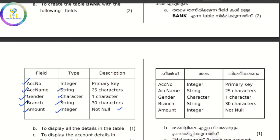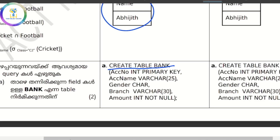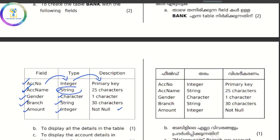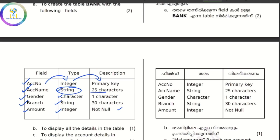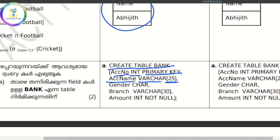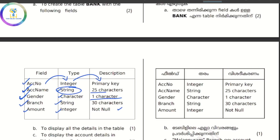We will add account number with data type integer — that is the primary key, so account number is primary. Then account name, that is string, maximum 25 characters — data type varchar, maximum 25. Then we will add gender — character, F or M, female or male, one character. Branch uses a string of 30 characters, so branch is 30.